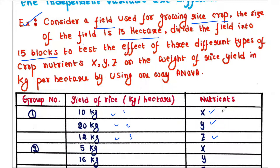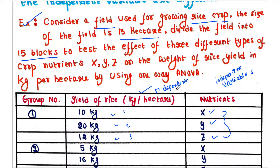These three nutrients are the independent variables, since they are not dependent on anything. Our mission is to check their effects on rice yield, so rice yield is the dependent variable — it is dependent on these three independent variable nutrients.